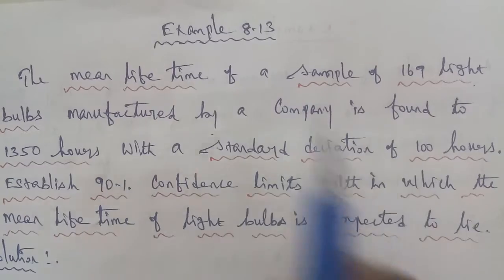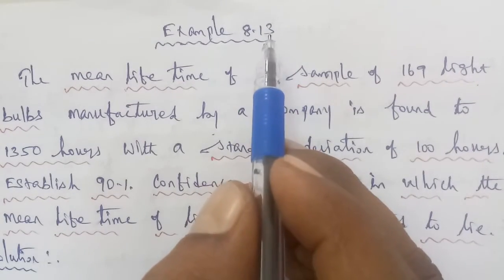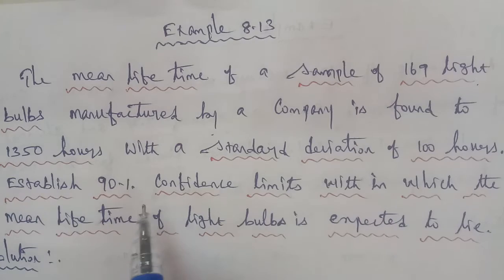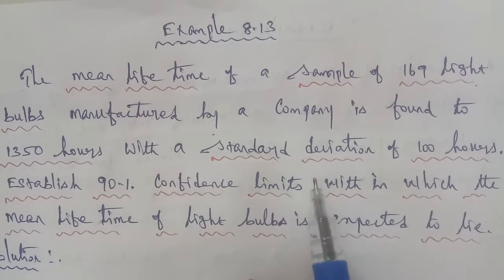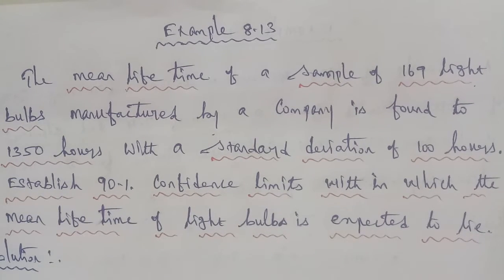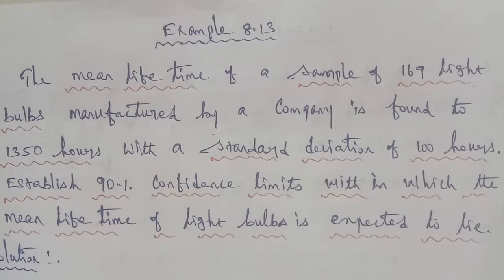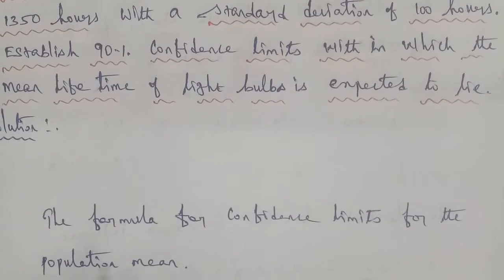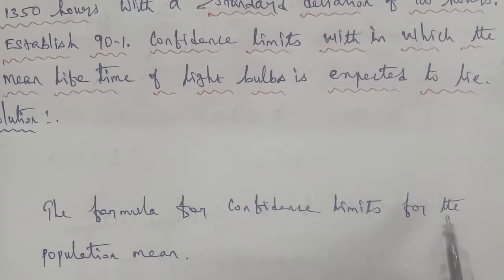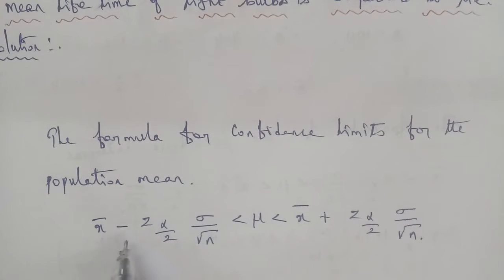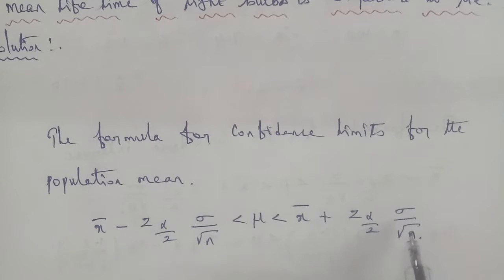This is similar to the previous Example 8.11, but that used 95% confidence level and this one asks for 90% confidence limits. So we use the same formula for confidence limits for the population mean: x̄ - z(α/2) × σ/√n < μ < x̄ + z(α/2) × σ/√n.